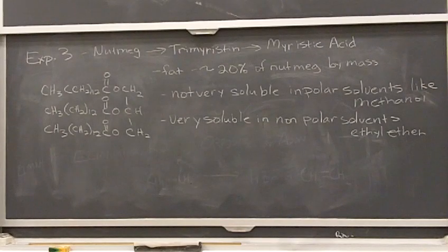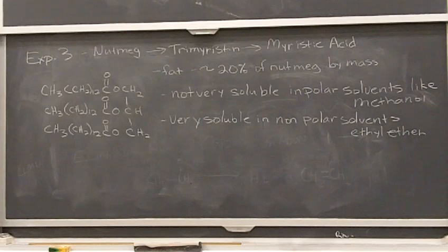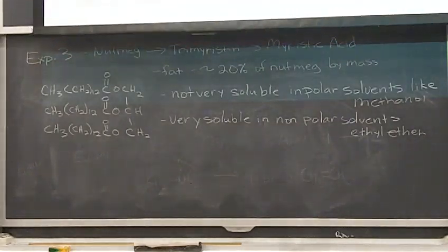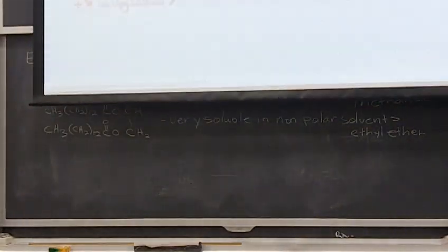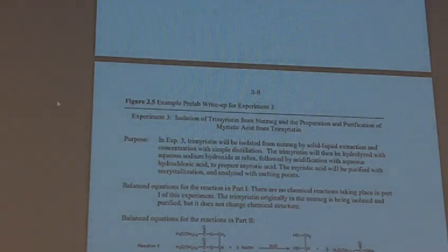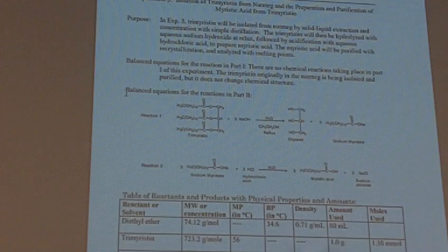We're talking about the pre-lab for experiment three. In your lab manual is the pre-lab for experiment three — I've made a few modifications to it, so I've actually posted on Moodle an updated experiment three. On Moodle it's listed as experiment three for the lab manual for week number four, and that is the entire experiment. Pages eight and nine have the information for the pre-lab.